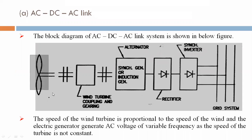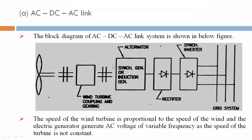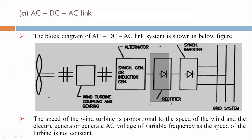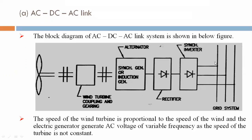Here we see the wind turbine, which is connected with a coupling and gearing system. Here is a synchronous generator or induction generator, also called an alternator. Here a rectifier is present, followed by a synchronous inverter, and after that the power goes to the grid system.